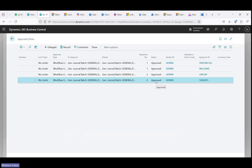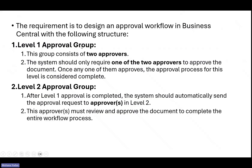With this, I think we have achieved our requirement: the level one approval group where William and Veronica are the approvers — if one of them approves, the request is sent to the second level. In the second level we have Greg and Sanjay, and if one of them approves — in this case Greg approved — the whole document workflow process is completed. Thank you all.